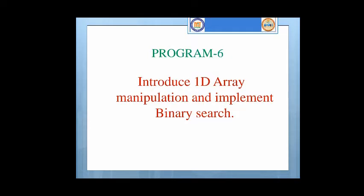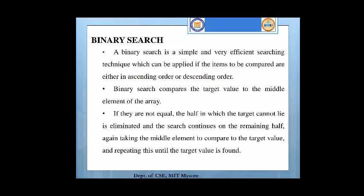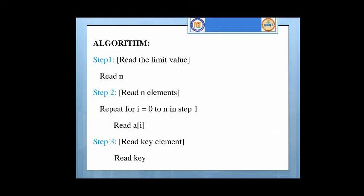Introduce 1D array manipulation and implement binary search. A binary search in C is an example of a simple process that can be used to dissolve complex problems. It's an important foundational concept that you will find in almost all good books on the C programming language. Binary search is a simple and very efficient searching technique which can be applied if the items to be compared are either in ascending or descending order. Binary search algorithm applies to the sorted array for searching an element.